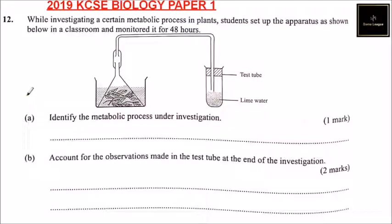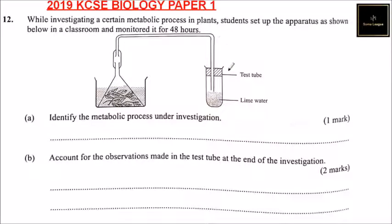Question number 12. While investigating a certain metabolic process in plants, students set up the apparatus as shown below in the classroom and monitored each for 48 hours. Here you can see we have leaves, we have a connecting tube, we have a test tube that has rainwater. Identify, part A, identify the metabolic process under investigation.